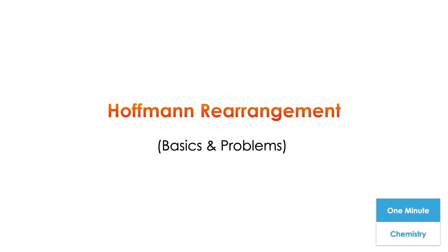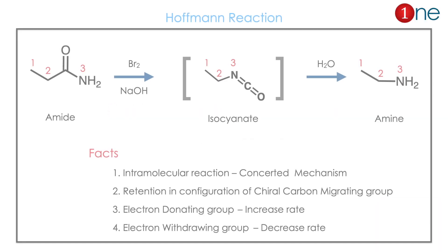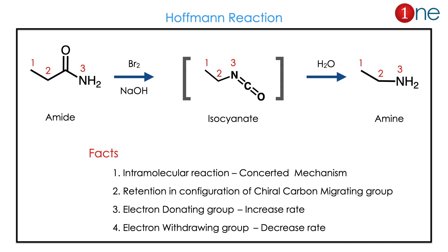Welcome to One Chemistry. This is the one minute chemistry series. We are going to quickly see what is Hofmann rearrangement. We will see the basics and problems. What is Hofmann rearrangement? It is a conversion of amide to amine, basically.